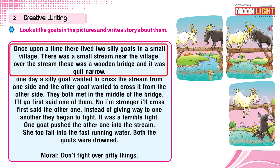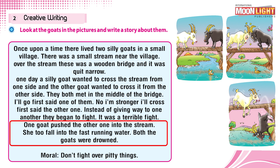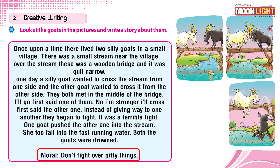Let's review the full story: Once upon a time, there lived two silly goats in a small village. There was a small stream near the village, and over the stream there was a narrow wooden bridge. One silly goat wanted to cross from one side; the other wanted to cross from the other side. They met in the middle. 'I'll go first,' said one. 'No, I am stronger, I will cross first,' said the other. Instead of giving way, they began to fight. It was a terrible fight. One goat pushed the other into the stream; she too fell into the fast-running water. Both goats were drowned. The moral: do not fight over petty things.